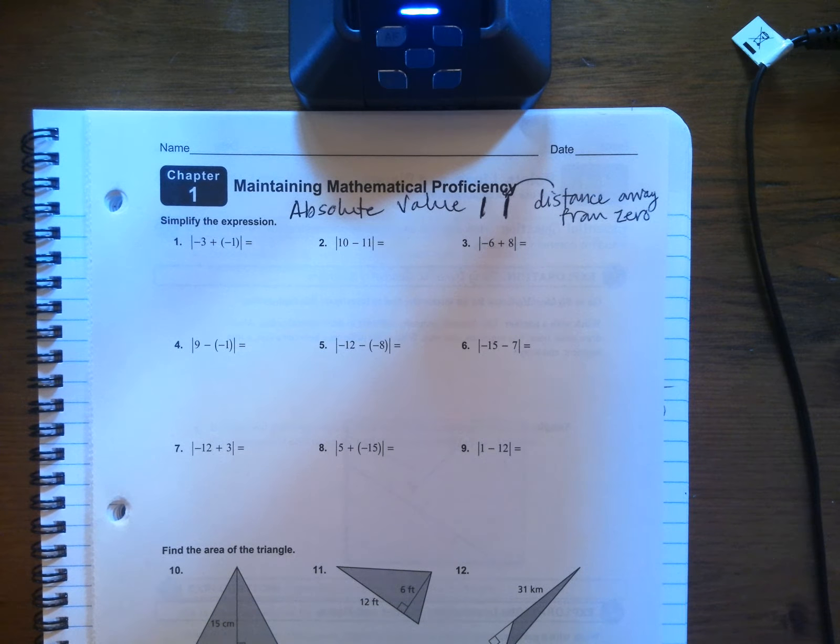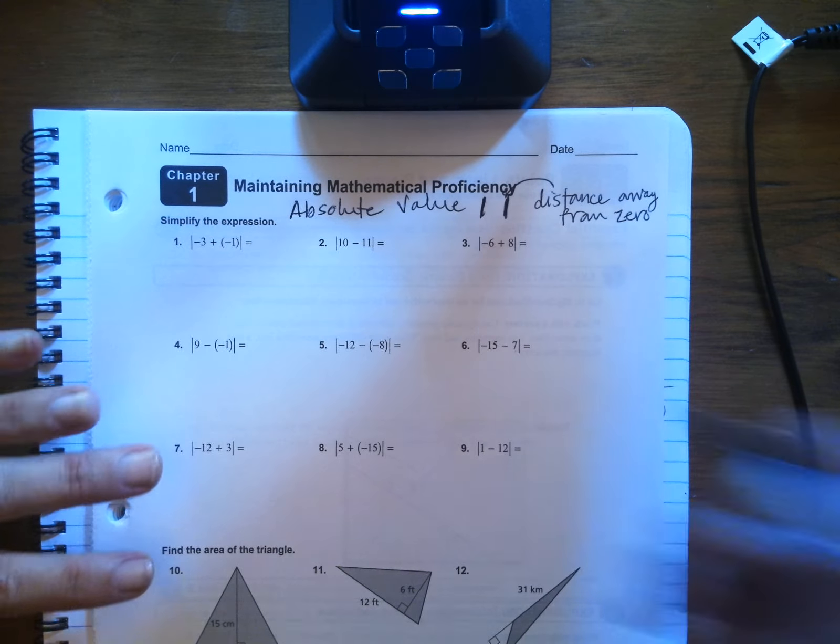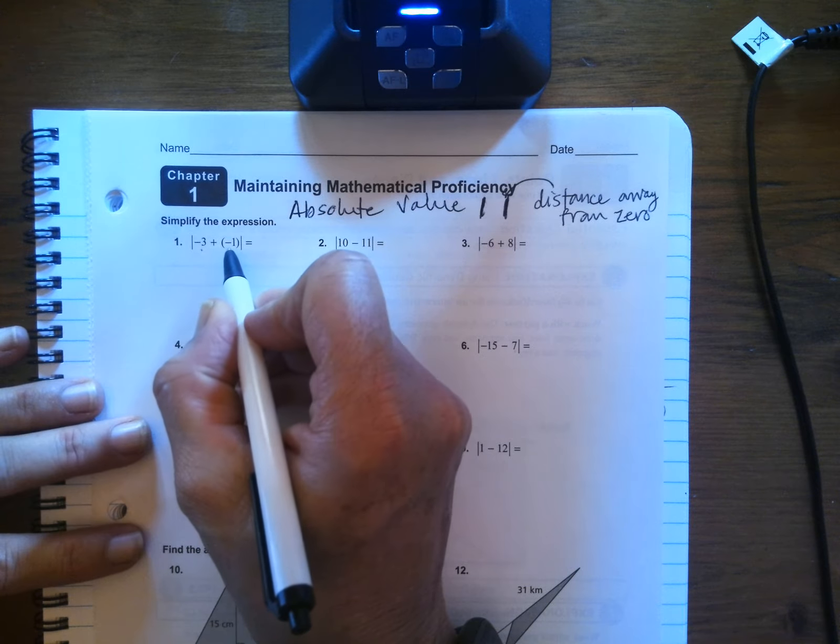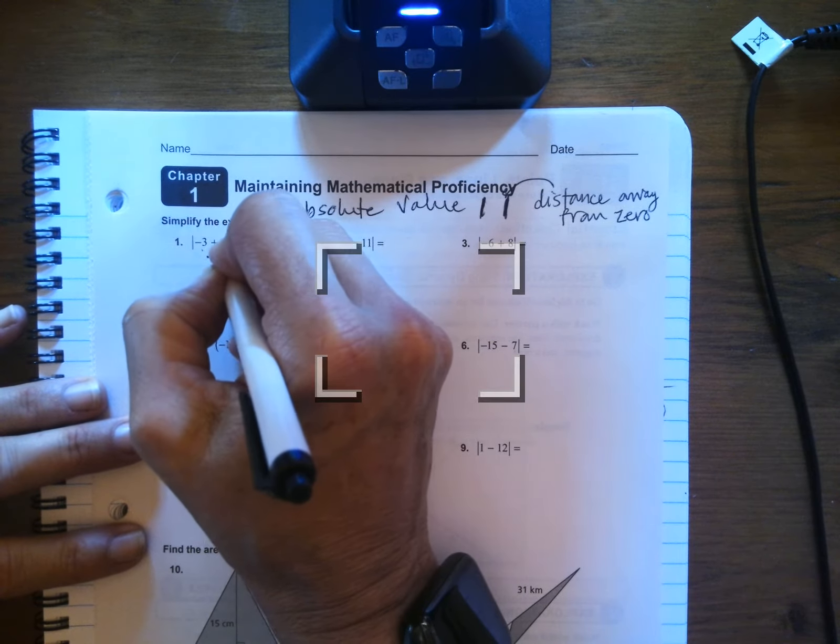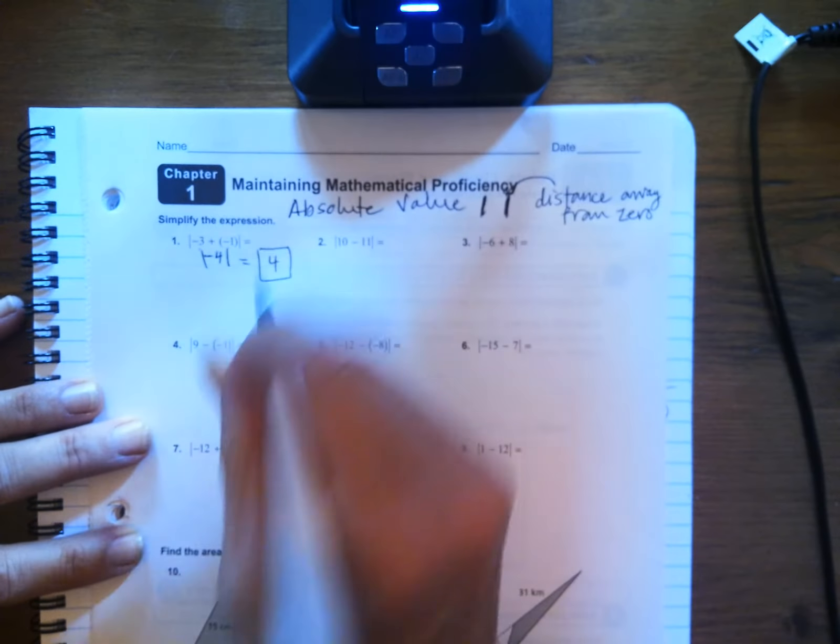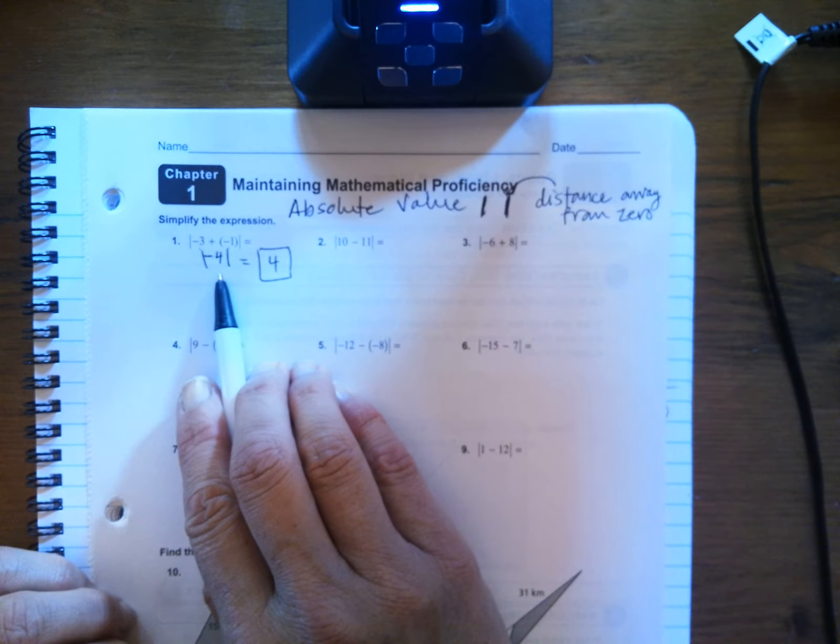So you do the operation of whatever is inside. This is three negatives added to one more negative, so it's a total of four negatives. But the answer is positive four because this is four units away from zero.